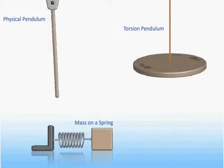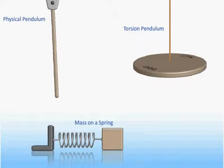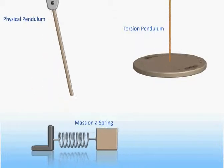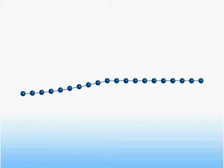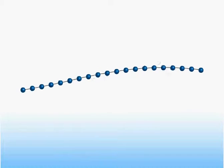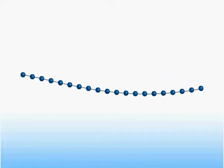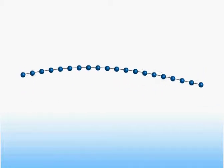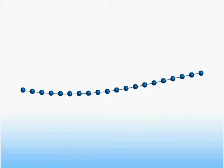In the last two pre-lectures, we have studied various systems oscillating with simple harmonic motion. We will now consider systems made up of many objects that are coupled together, and we'll study what happens when these systems are driven so that each part of the system is undergoing simple harmonic motion.